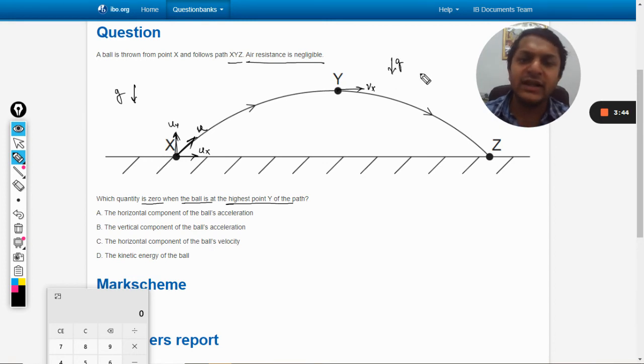Now, which quantity is zero when the ball is at the highest point? The horizontal component of the ball's acceleration. So the horizontal component of the ball does not exist because the air resistance is negligible.